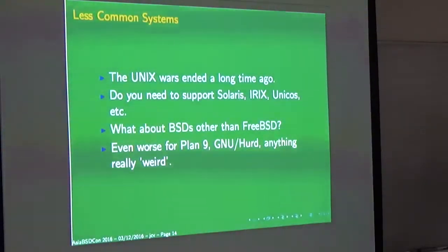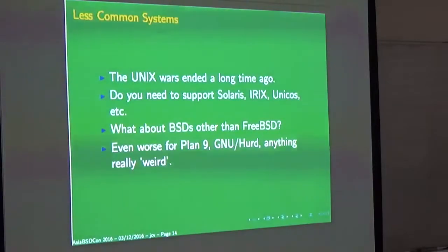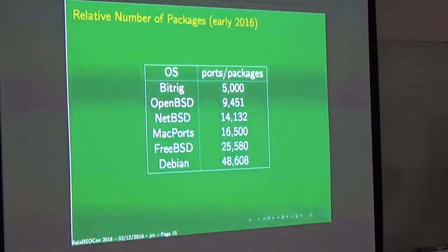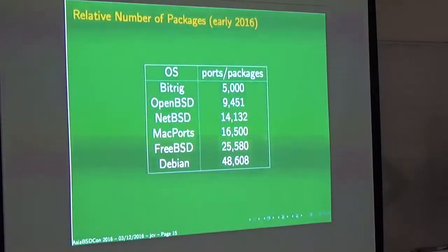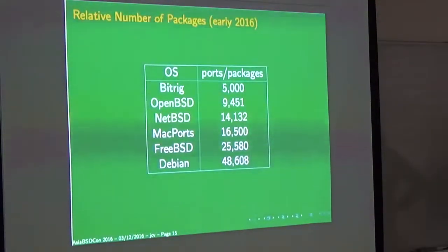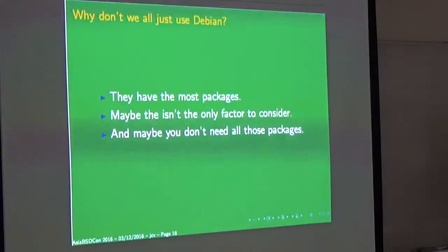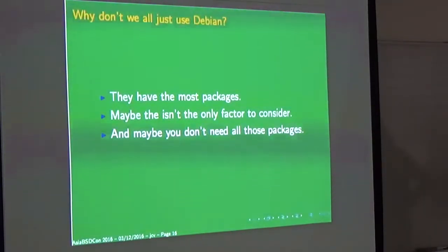If you're on something weird — Plan 9 or anything other than the mainstream — you start having problems with third-party things. To give a sense of scale: BitRig has fewer packages than everyone else, which is fine because OpenBSD has more, and it keeps going. These numbers aren't exact because people break packages up differently — Linux distros have a tendency to put development headers in separate packages, and there are questions about how many versions of Ruby or how many ways to break up LaTeX you want.